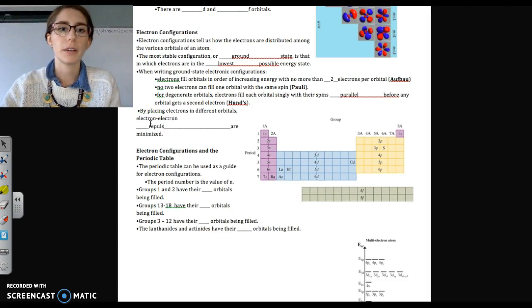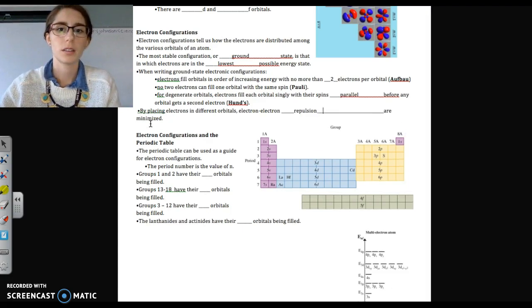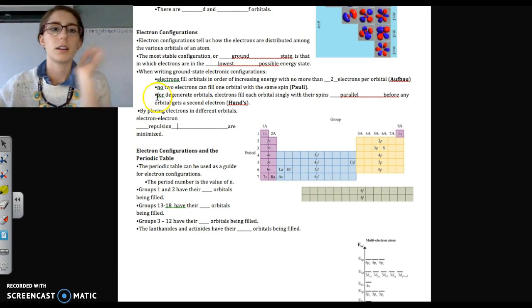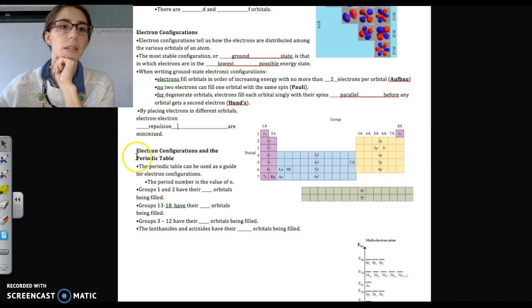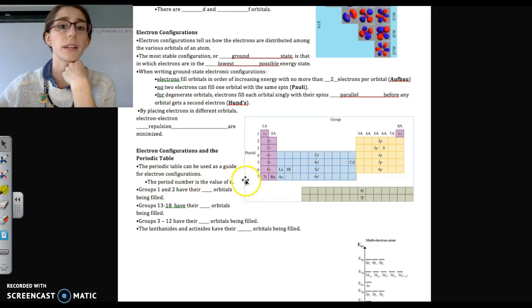Okay, and if we look at our periodic table, we can sort of use it as a guide for figuring out our electron configurations quickly when we get more practice. And for those of you who are new to this, it just takes practice. The periodic table, or the period number, tells us the value of n, or the principal energy level.